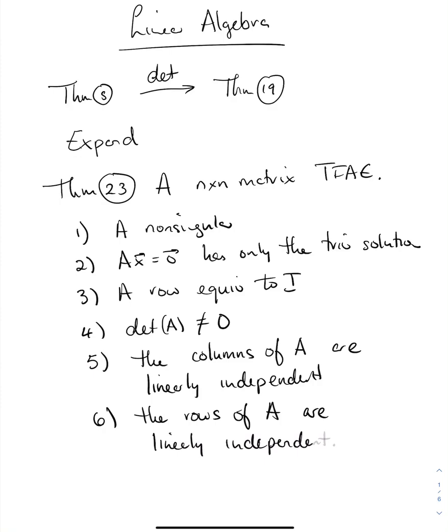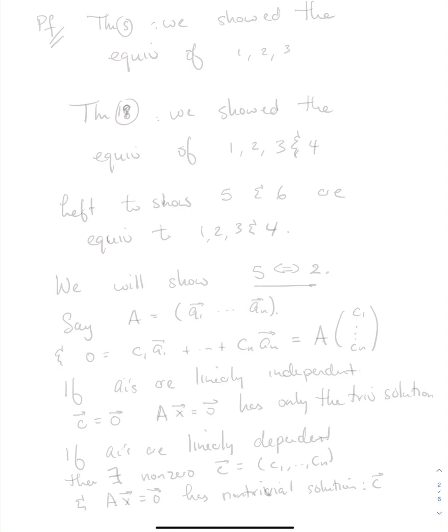Let's prove this. What you'll recall, hopefully, is that when we established theorem 5, we showed the equivalence of 1, 2, and 3. And then when we did theorem 18, we showed the equivalence of 1, 2, 3 to 4.